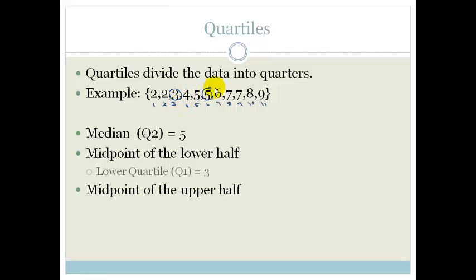The midpoint of the upper half is going to be 7. And that is called Q3, or the upper quartile. So we have got the median, which is Q2, the midpoint of the lower half, which is Q1, and the upper quartile, which is Q3.